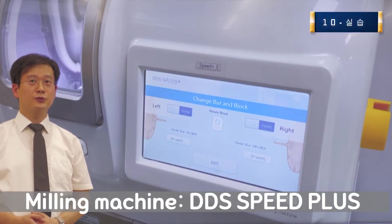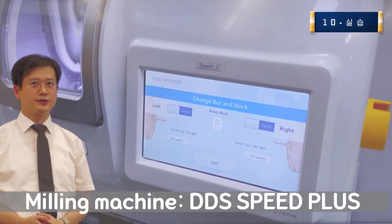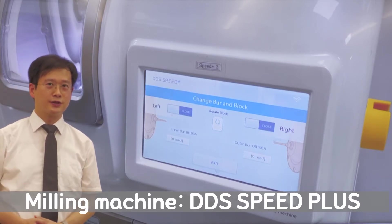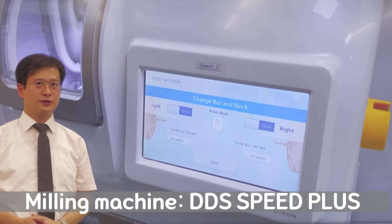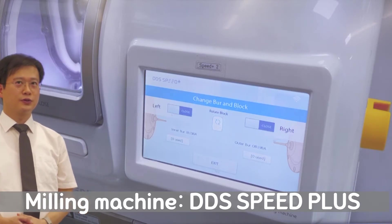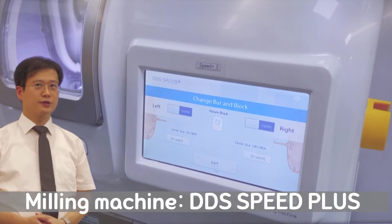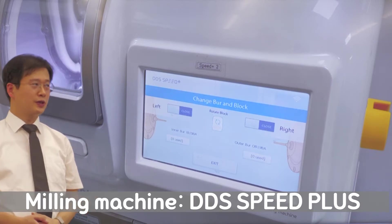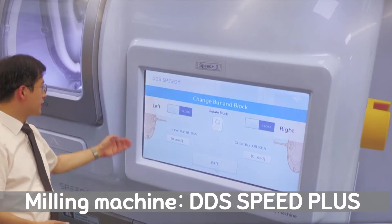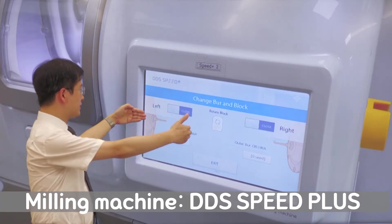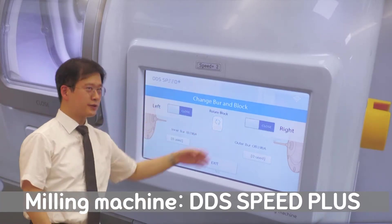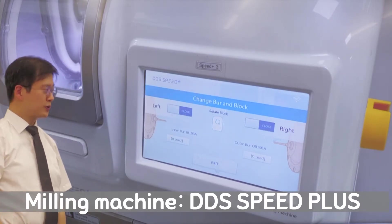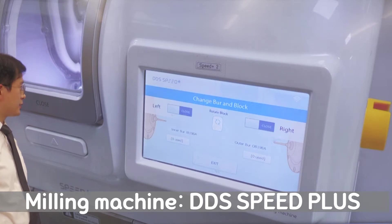I will explain how to build a ceramic restoration with a chairside milling machine in a dental clinic. This milling machine has to cut the crown as fast as possible, so it is equipped with a milling tool at both sides, left and right side. I will show you how to prepare for the milling procedure.